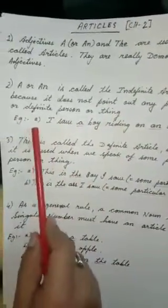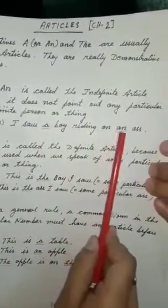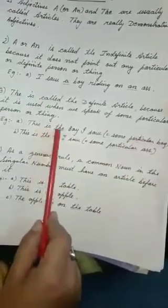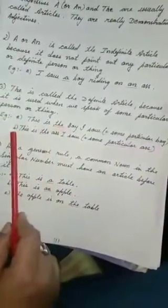Number 2, A or AN is called the indefinite article because it does not point out any particular or definite person or thing. For example, I saw a boy riding on an ass. This is talking about any boy, not a specific one.